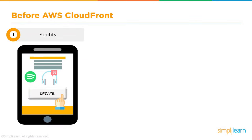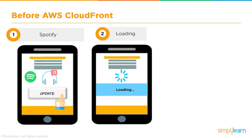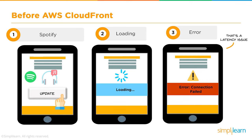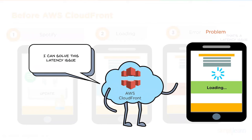Before AWS CloudFront, here's an example: you must be aware of an application called Spotify. When you used to access Spotify and click on it, it kept loading and at the end you would get an error — the connection failed — because of a latency issue, probably a network error. These kinds of latency issues also impact the performance of an application.